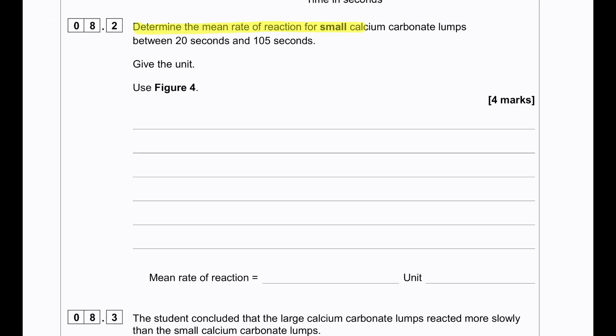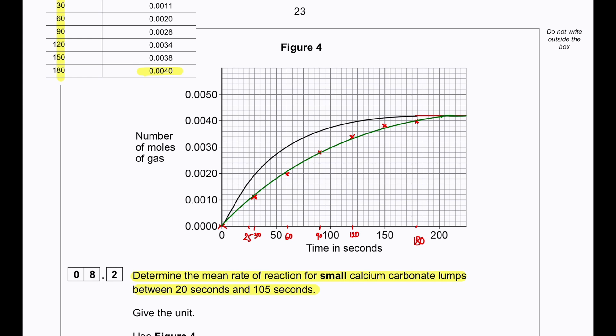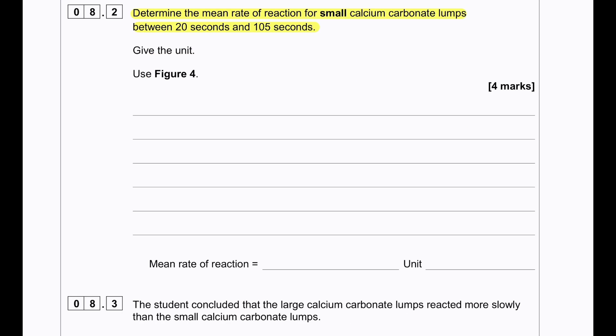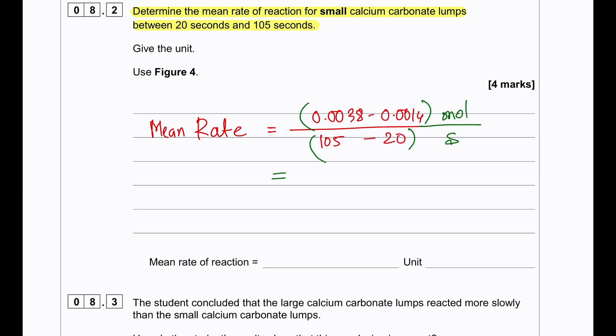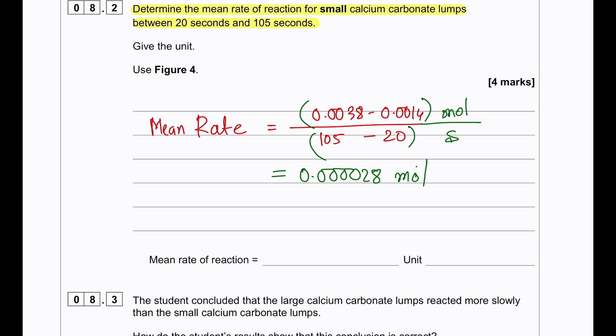Determine the mean rate of reaction for small calcium carbonate lumps between 20 seconds and 105 seconds. So to determine the mean rate of reaction of small calcium carbonate lumps, we will extrapolate at 20 seconds and our value will be 0.0038. And then we will extrapolate at 105 seconds, our value will be 0.0014. Then we are going to calculate 0.0038 minus 0.0014 divided by 105 minus 20. This will give us the time and as a result we will get the gradient which will give us 0.000028 or 2.8 times 10 to the power of minus 5 moles per second.